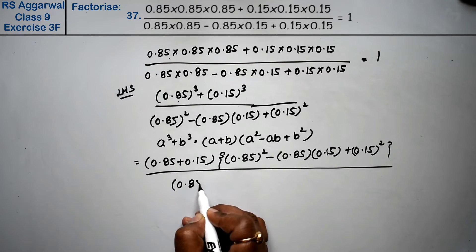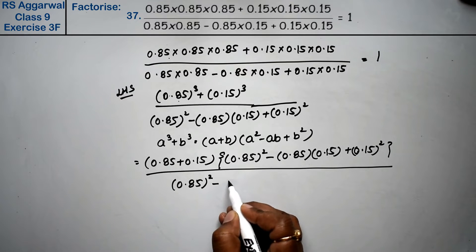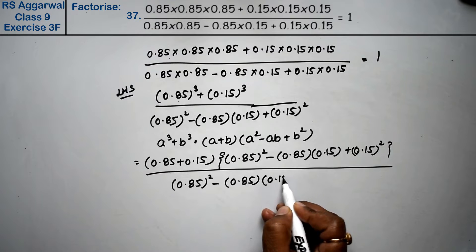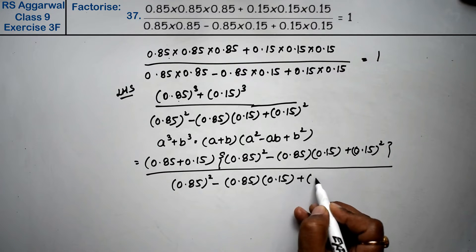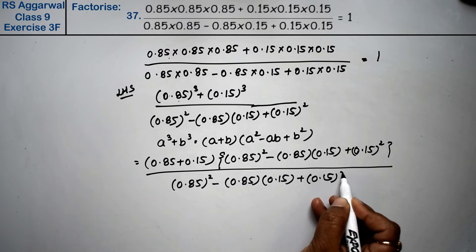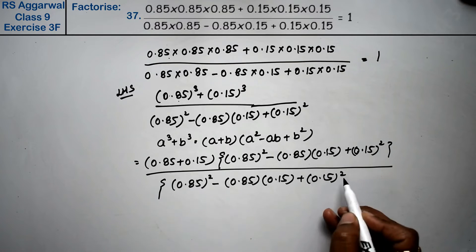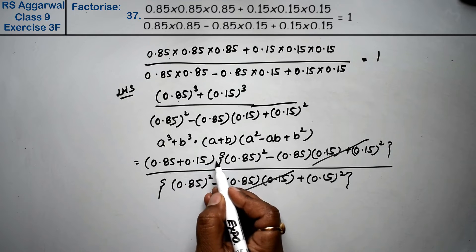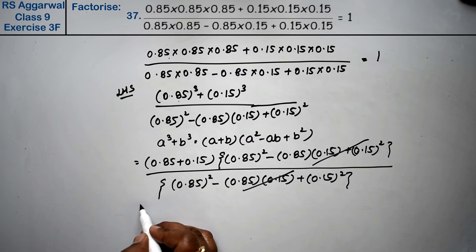0.85 whole square minus 0.85 × 0.15 + 0.15 whole square. You can see, this is the same. So this will cancel because in both brackets there is a multiplication sign.